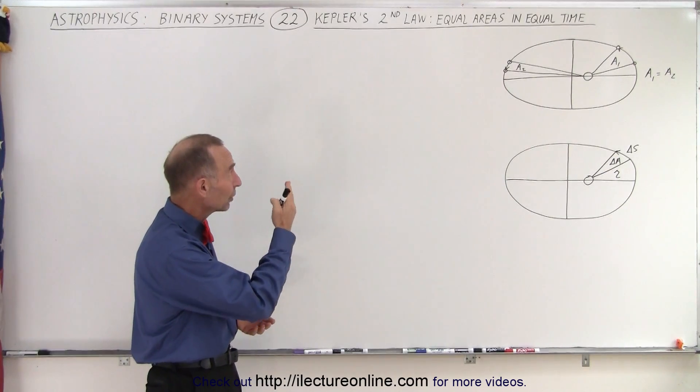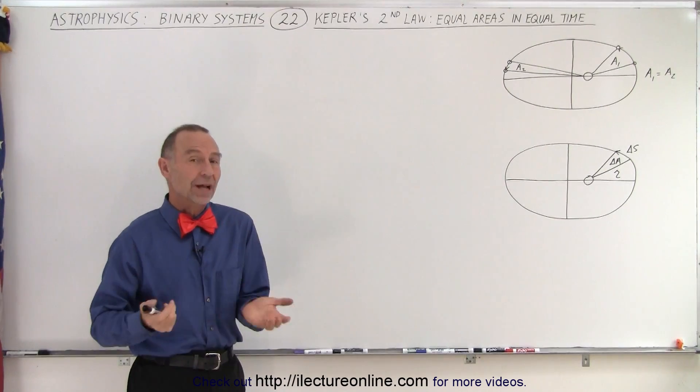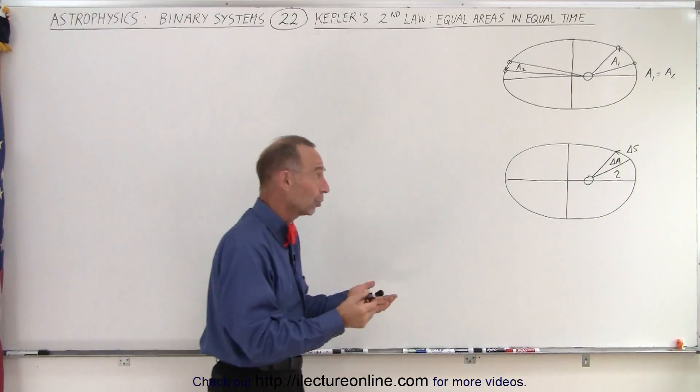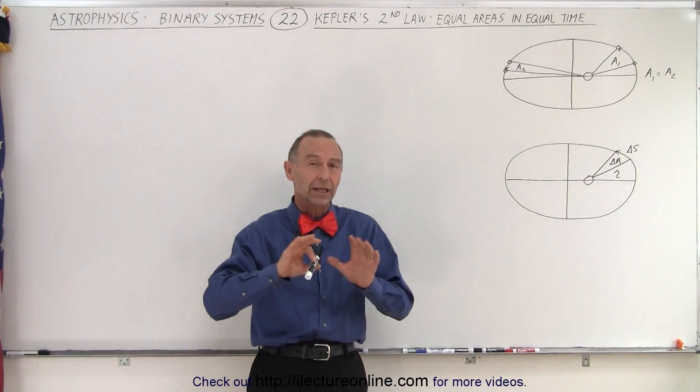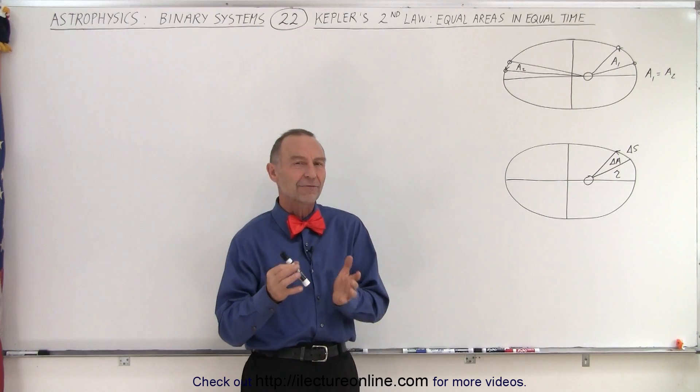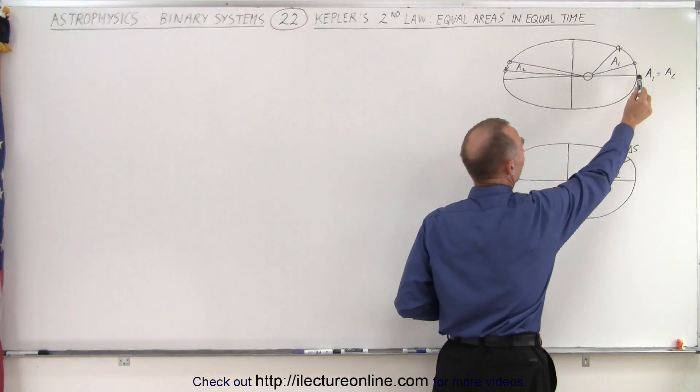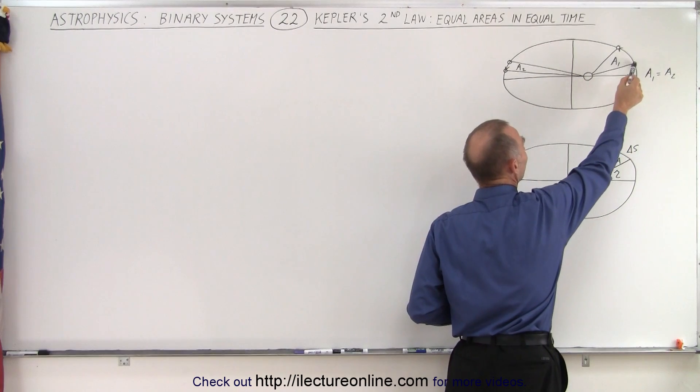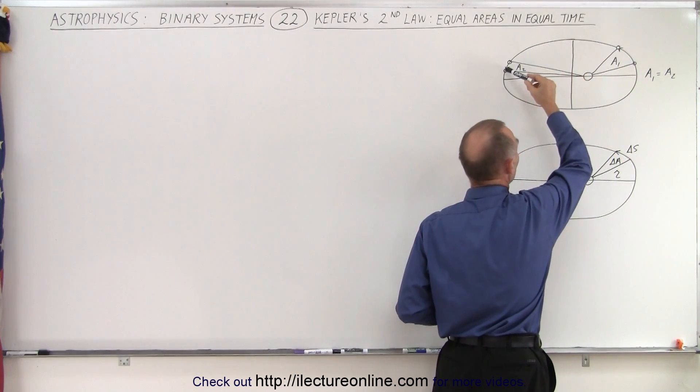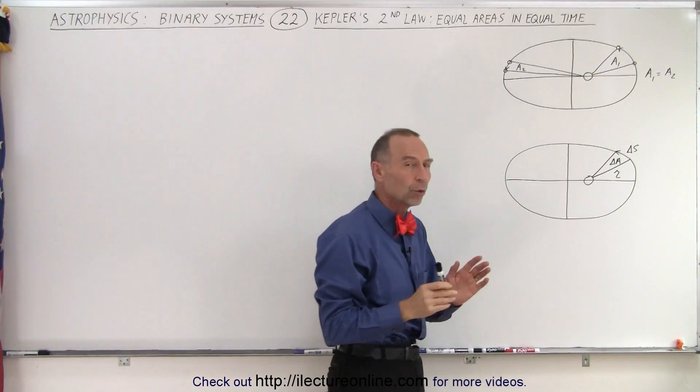It's understood to be what we call equal areas in equal time. What that meant was that he observed, based on the data from Tycho Brahe, he understood that when planets are close to the sun, they appear to be moving faster, and when they're far away from the sun, they appear to be moving slower.